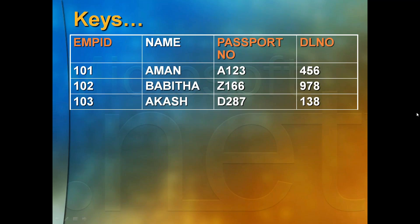The second time, instead of using a name, I said: 'Student number 1234, please come to the dais and take this award.' Now I got only one person. Even though I have thousands of students, when I say student number 1234, I get only one guy. So using which attribute I am able to get only one person — even though I have thousands of students — that attribute is called a key attribute.